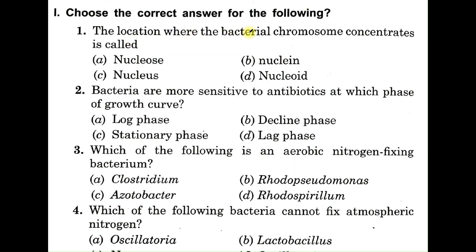Question number one: the location where the bacterial chromosome concentrates is called — option A: nucleus, B: nucleus, C: nucleus, D: nucleoid. The correct answer is D, nucleoid. In bacteria, the nucleus is not a true nucleus but is in the form of a nucleoid, and it lacks the nuclear membrane.